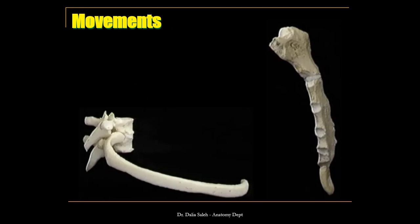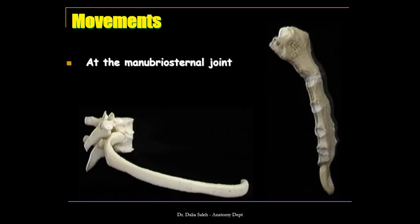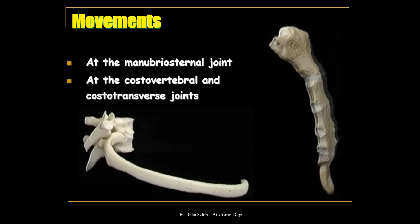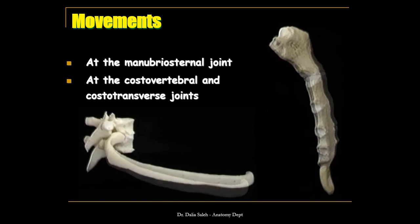Regarding the movements of the thoracic cage, there are two types. First, forward and backward movement, which occurs at the sternal angle. The manubriosternal joint allows some flexibility, so during inspiration the sternum moves forward, and during expiration it moves backwards. The second type of movement occurs at the costovertebral and costotransverse joints between the ribs and the vertebrae. This is described as a bucket-handle movement, where the ribs move upward during inspiration to increase the transverse diameter of the thorax, or move downward during expiration to decrease it.